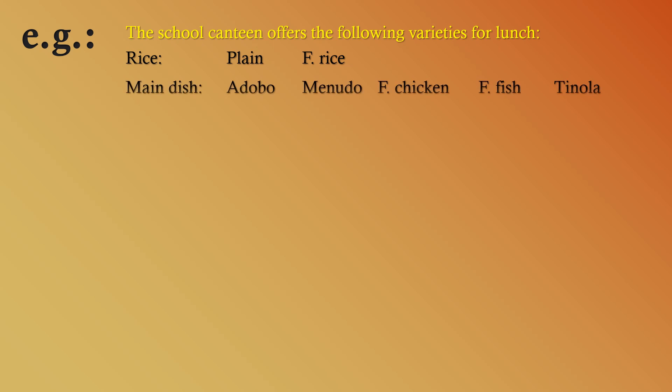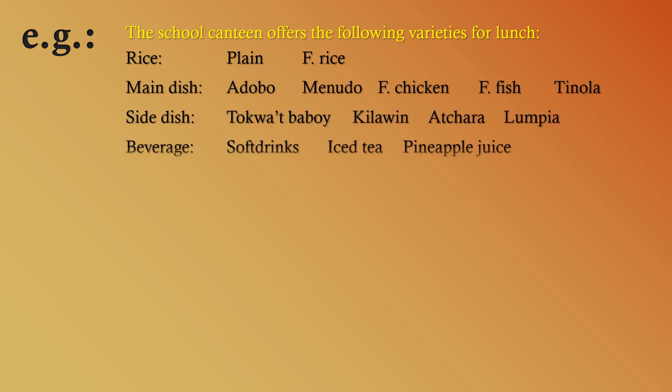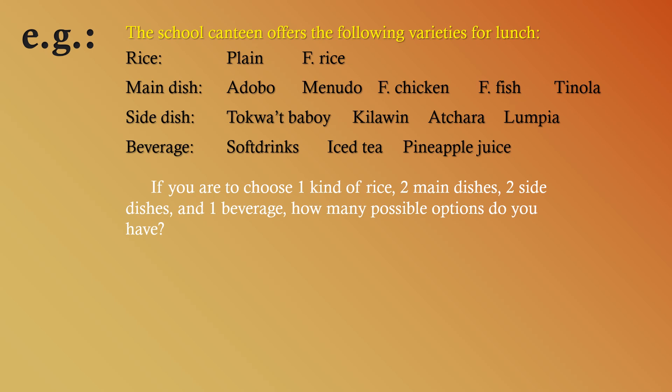The school canteen offers the following varieties for lunch: for rice, two kinds — plain rice and fried rice; for the main dish, adobo, menudo, fried chicken, fried fish, and tinola; for the side dish, tokwat baboy, kilawin, achara, and lumpia; and for the beverage, soft drinks, iced tea, and pineapple juice. The question is: if you choose one kind of rice, two main dishes, two side dishes, and one beverage, how many possible options do you have?